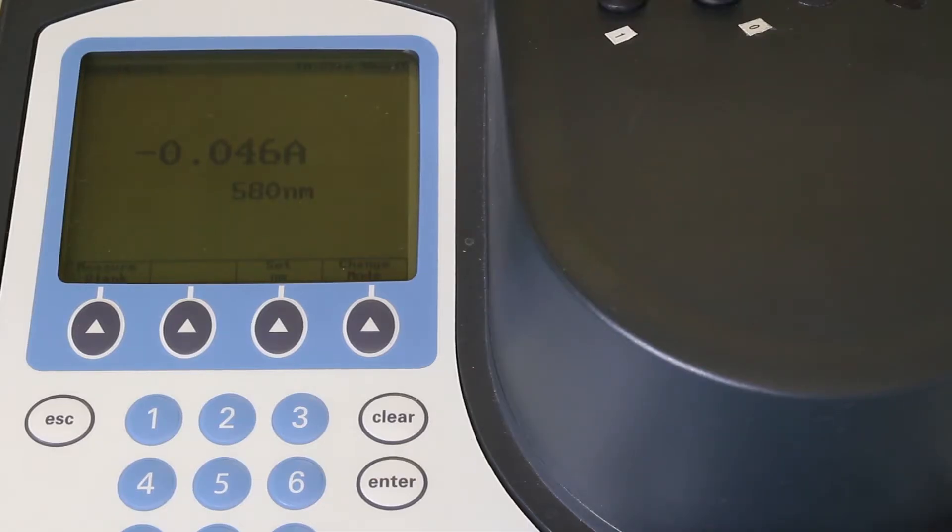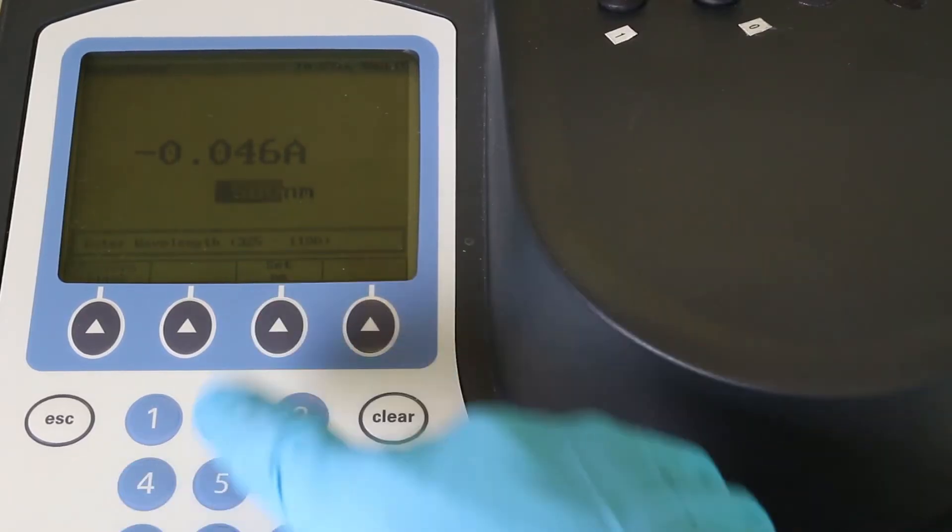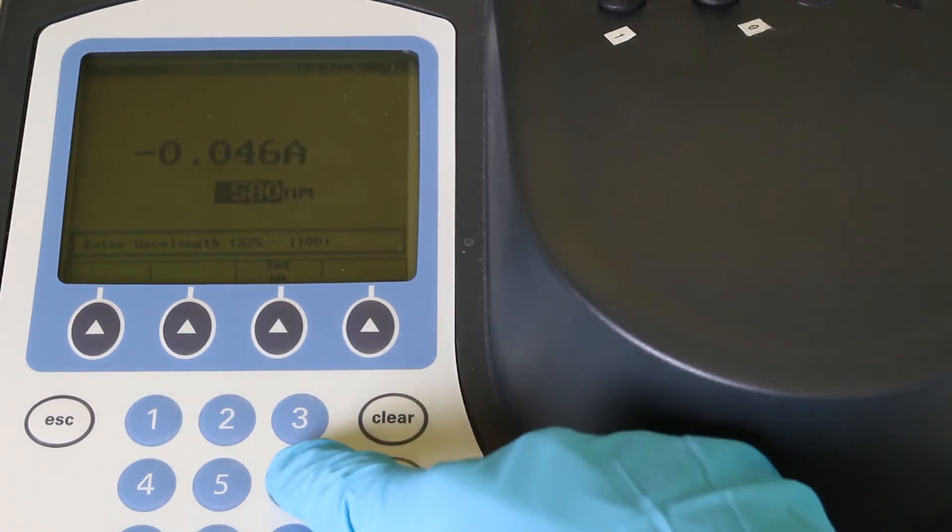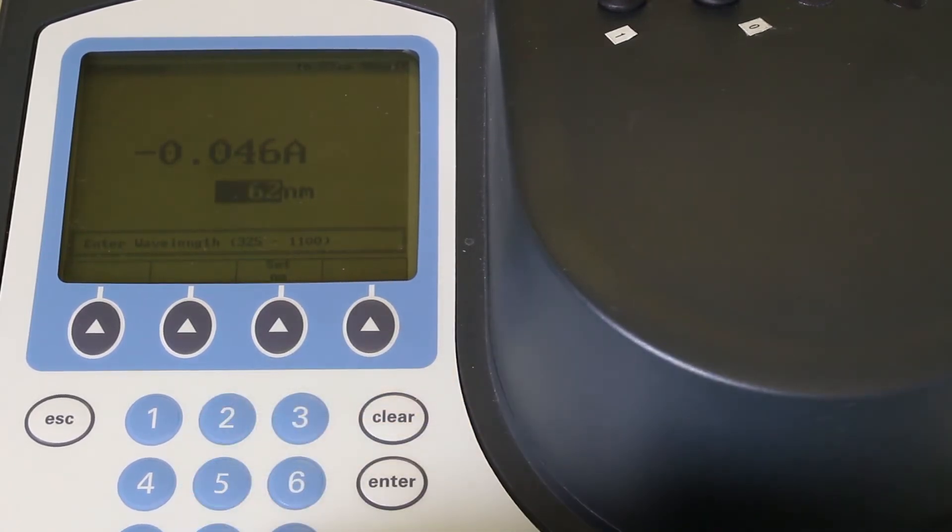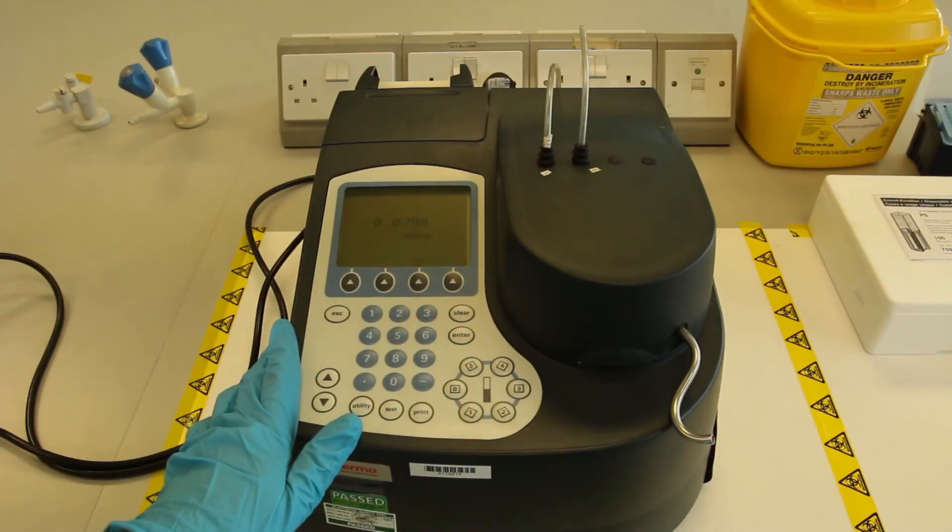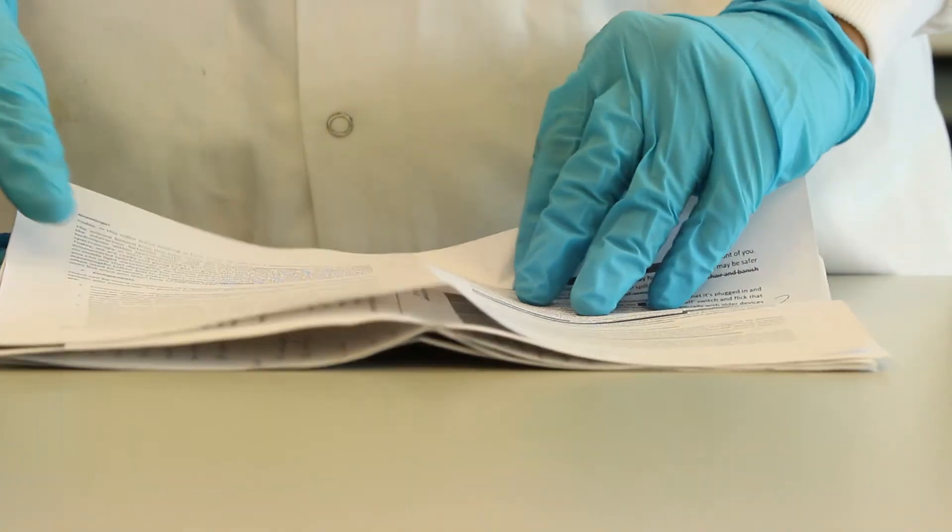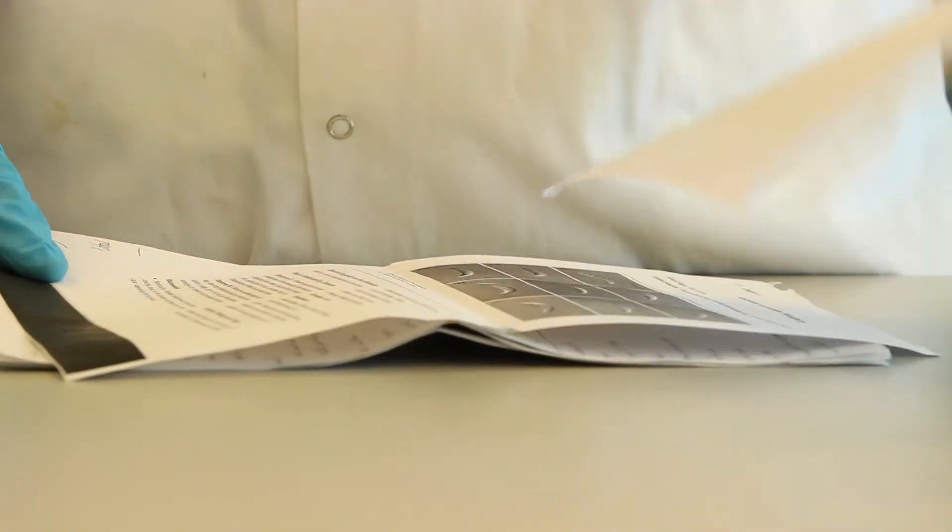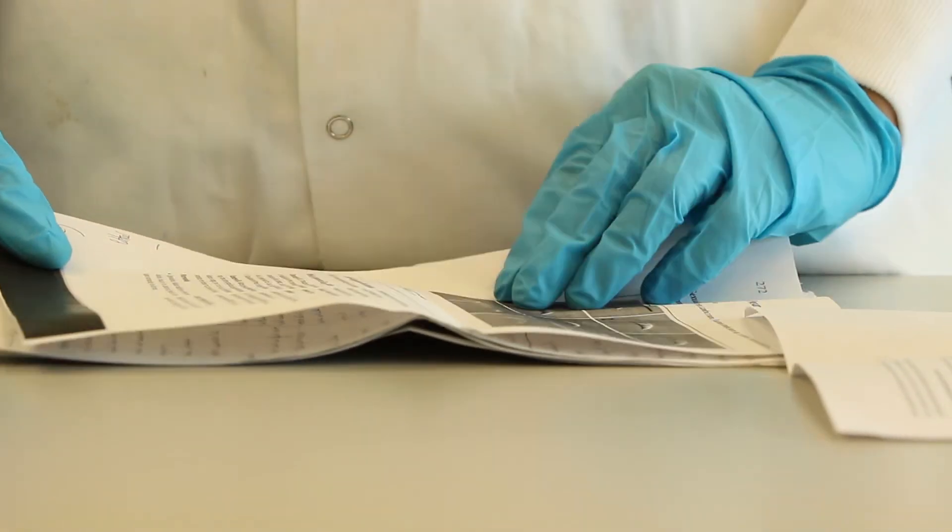Once you are ready to start your experiment, tune the spectrophotometer to the wavelength you are interested in. This will be dictated by the substance that you are studying. Thus before you begin your work, ensure that you know what wavelengths are most appropriate for the work to be performed.